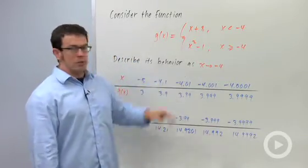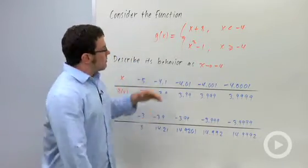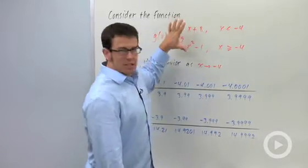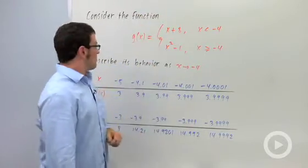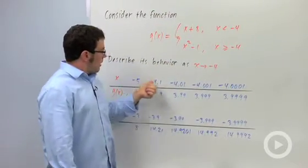Describe its behavior as x approaches negative 4. Well, at negative 4, that's where the two pieces are kind of joined together, and so it may behave differently depending on what side of negative 4 we're on. So let's try approaching negative 4 from the left.